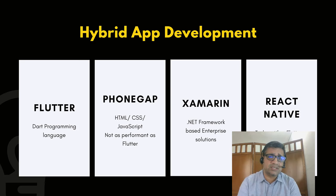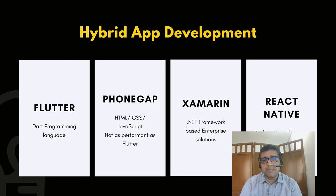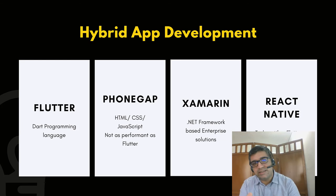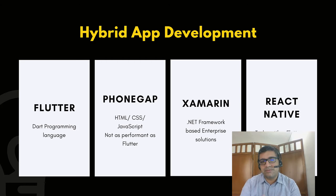Xamarin is based on the .NET Framework, so companies already using .NET can integrate it easily into their existing systems. However, many are shifting from Xamarin to Flutter because Flutter is more performant. React Native is also very popular for hybrid app development — it may not be as performant as Flutter, but it is easier to build the web solution alongside it. Nowadays hybrid app development mainly occurs in Flutter or React Native.